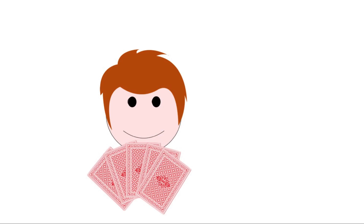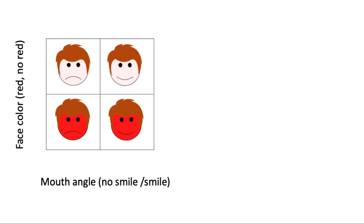Let's go back to our problem of predicting whether our friend is bluffing while playing poker from face color and mouth angle. To demonstrate the XOR problem, we're going to reduce this problem of bluff detection into a binary possibility space suitable for binary operators like XOR. We'll imagine a friend who has only two types of face color — pale versus red — and only two types of mouth angle — smile versus frown.